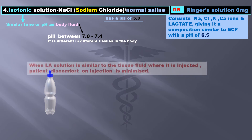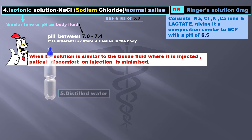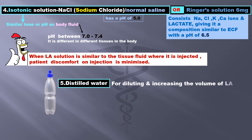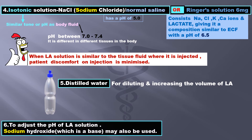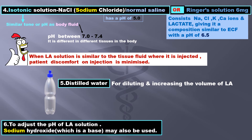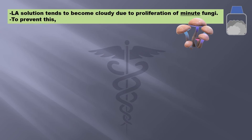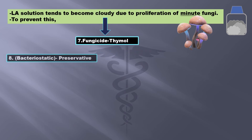When the LA solution is similar to the tissue fluid where it is injected, patient discomfort on injection is minimized. Distilled water is also added for diluting and increasing the volume of LA. To adjust the pH of the solution, sodium hydroxide, which is a base, may also be used. LA solution tends to become cloudy due to proliferation of minute fungi, so to prevent this, a fungicide — thymol — is used.